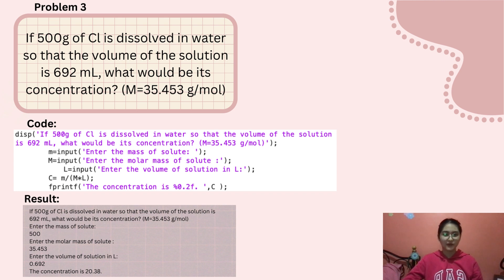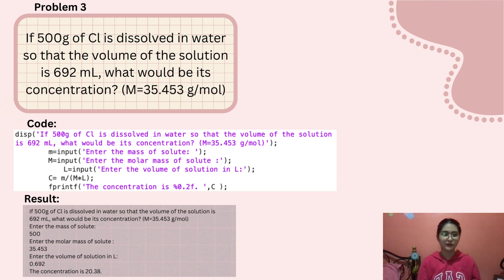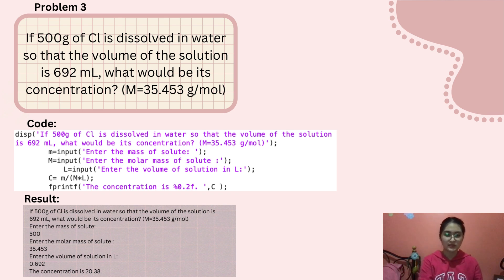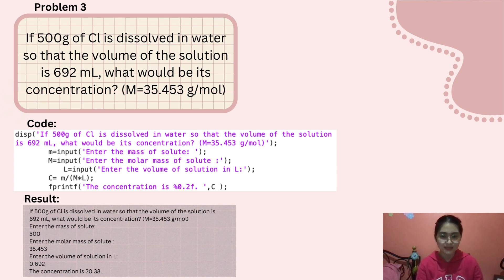For the third problem: if 500 grams of chlorine is dissolved in water so that the volume of the solution is 692 ml, what would be its concentration? When the molar mass is 35.453 g per mol, you enter the mass of solute, which is 500; the molar mass of solute, which is 35.453; and the volume of solution in liters, which is 0.692. The concentration is 20.38.